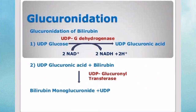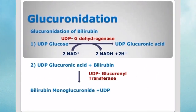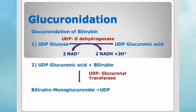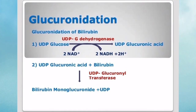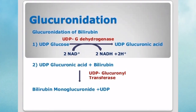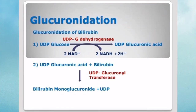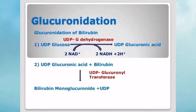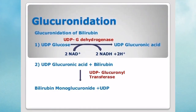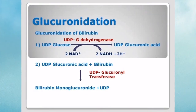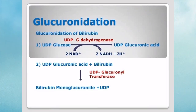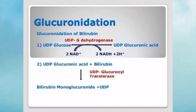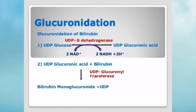When GALT is deficient, there would be no UDP-galactose formed, hence UDP-glucose will be greatly decreased. It is UDP-glucose that is converted to UDP-glucuronic acid, which is needed for the conjugation of bilirubin. When UDP-glucose is decreased, UDP-glucuronic acid will also decrease, and only a minute fraction of bilirubin would be conjugated, thereby increasing the amount of unconjugated bilirubin and ultimately causing jaundice.